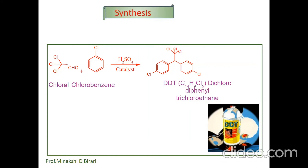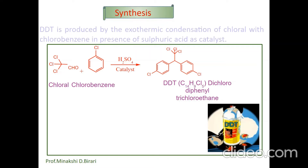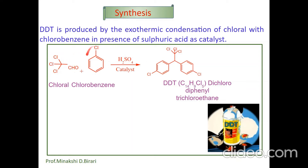DDT is produced by exothermic condensation of chloral with chlorobenzene in the presence of sulfuric acid as a catalyst. Chloral reacts with chlorobenzene in the presence of H2SO4 as a catalyst to give the product DDT — dichlorodiphenyltrichloroethane, molecular formula C14H9Cl5.